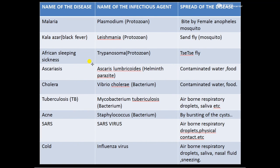These are some diseases caused by microorganisms and how they are spread. Take a screenshot and revise once or twice so you can easily remember the disease name, infectious agent, and spread of the disease. For example, malaria is caused by the protozoan Plasmodium and is spread by the bite of the female Anopheles mosquito. I hope you understood.